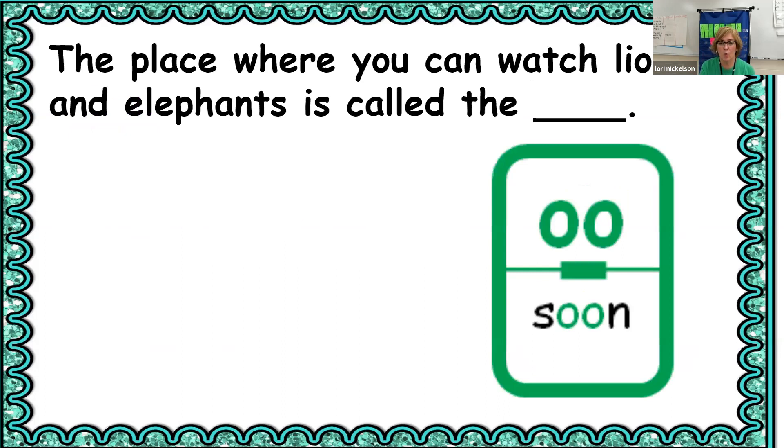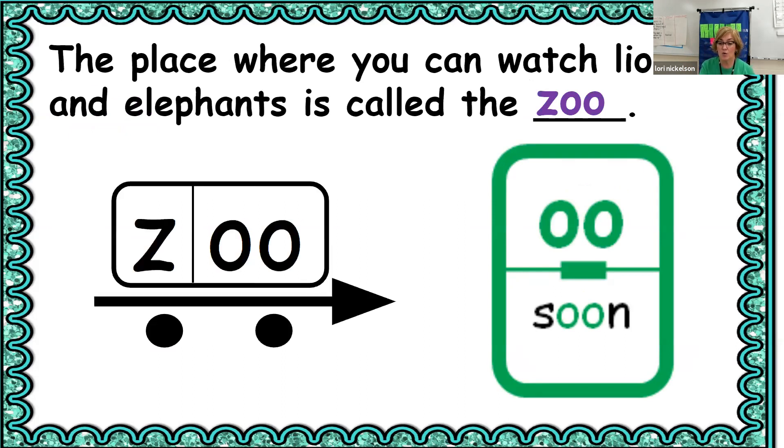The place where you can watch lions and elephants is called the zoo, right? Z-O-O. How many sounds does it have? Two sounds. And it has the ooo sound. Awesome job, guys.